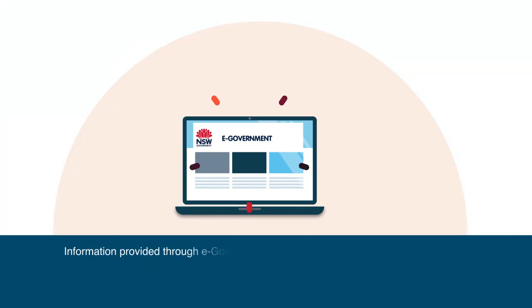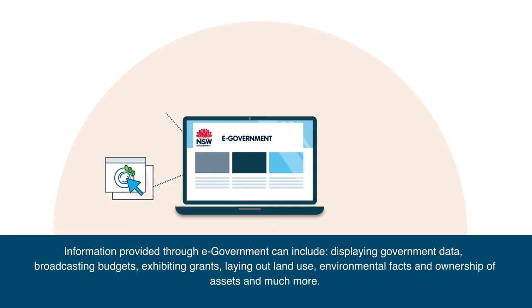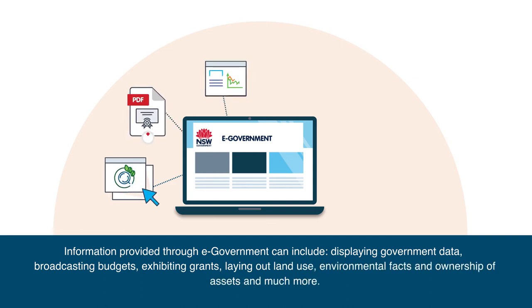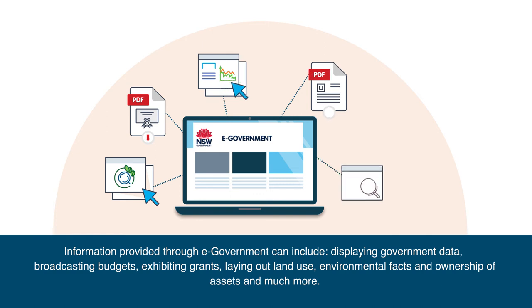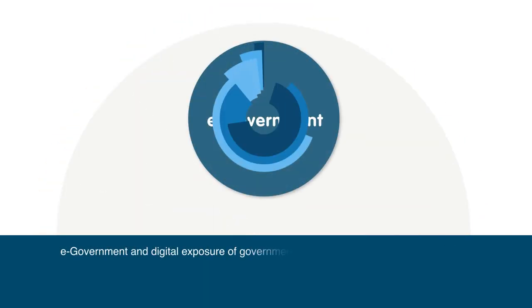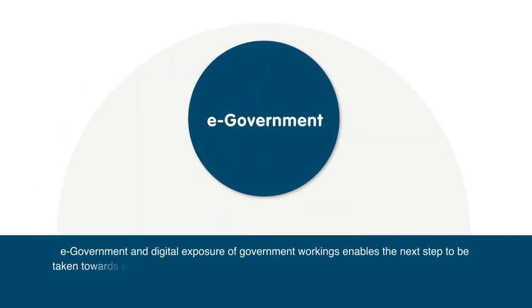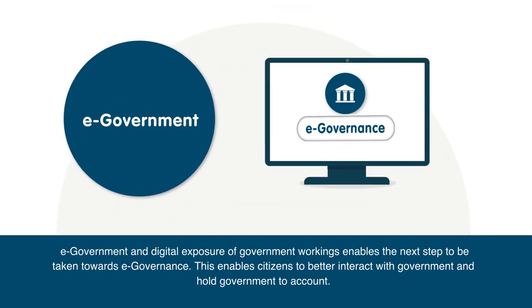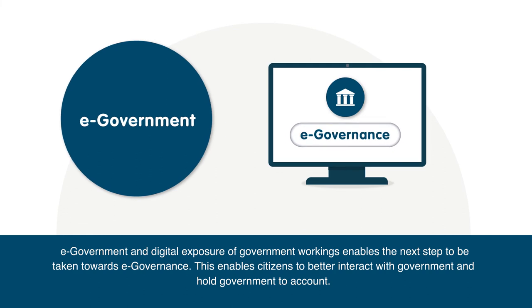Information provided through e-government can include displaying government data, broadcasting budgets, exhibiting grants, laying out land use, environmental facts and ownership of assets, and much more. E-government and digital exposure of government workings enables the next step to be taken towards e-governance.